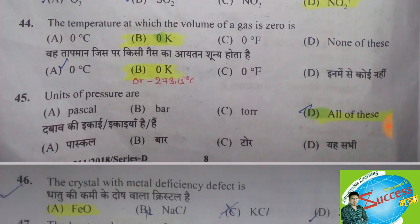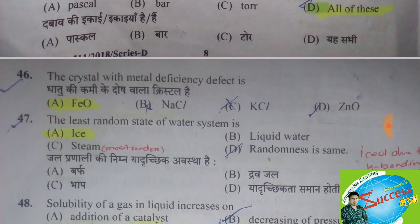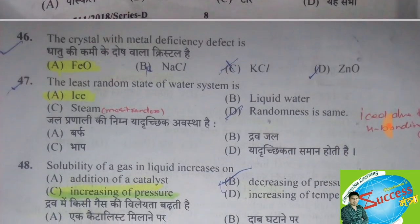Units of pressure — the correct answer is option D, all of these, because pascal, bar, and torr are all units of pressure. The crystal with the metal deficiency defect — the correct answer is option A, FeO (iron oxide).